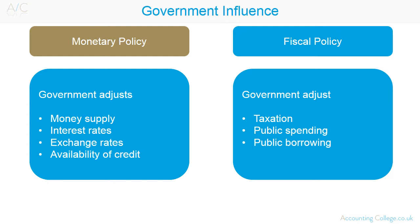Low interest rates will stimulate the economy as it's cheaper to borrow and savings don't earn as much interest. Fiscal policy looks at the balance between government income, which is taxation and borrowing, and expenditure. To stimulate the economy, governments can spend more money. Raised expenditure needs to be funded by either raising taxes or increasing borrowing. Raising taxes will reduce the amount that the public has to spend, resulting in low economic growth.